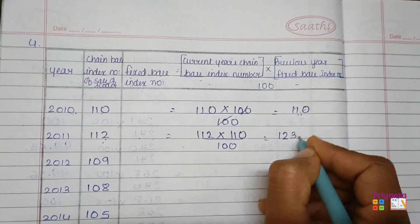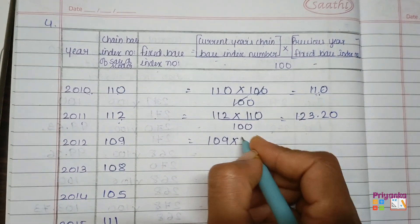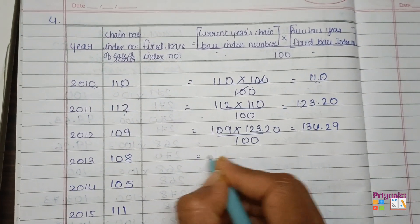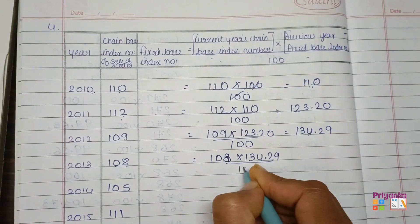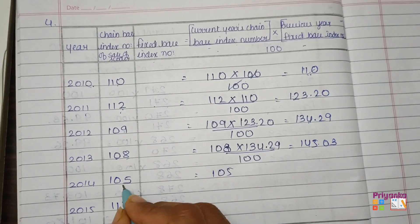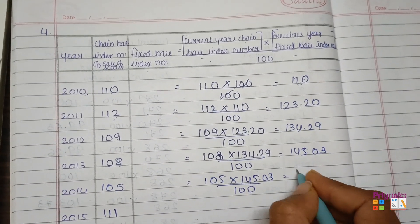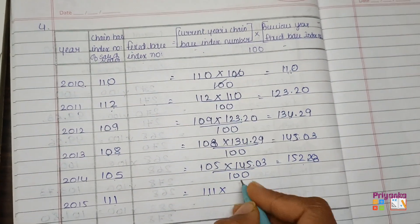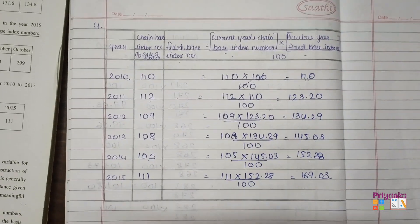For the next year, the current year chain base index number is 109 and the previous year fixed base index number is 123.20, multiplied and divided by 100 — giving 134.29. Next, the current year chain base index number multiplied by the previous year fixed base index number 145.3, divided by 100 — giving 152.28. Continuing with the remaining entries, we get 169.3 as the final answer. This completes Exercise 1.2.